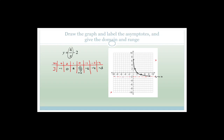Now let's draw the other half. When x is minus one, y is minus six. When x is minus two, y is minus four. When x is minus four, y is minus three. And again it's going to look something like that. So we've drawn the graph. The asymptotes are: this one here, y is equal to minus two, and the other one is x equals zero. Those are your two asymptotes — the y-axis and the y equals minus two line.